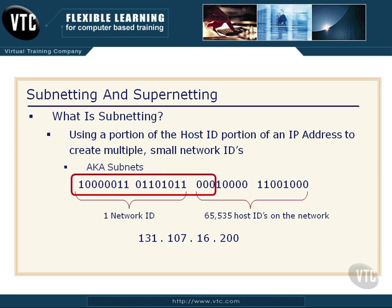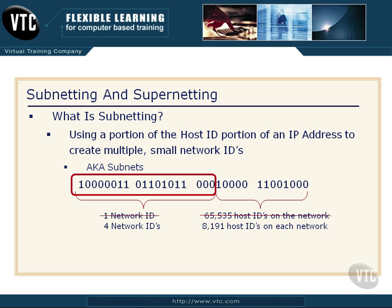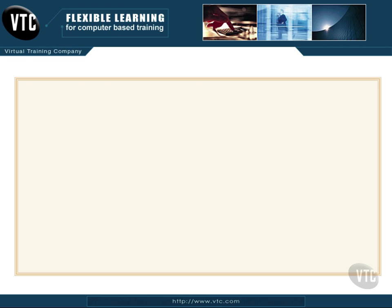What happens if we want more than one network and fewer hosts? Having 65,535 people on one network segment is going to be a problem. So how can we bust this up into smaller networks? We simply borrow bits to the right. This used to be our network ID, and now we're borrowing three bits to the right. When you work this out in binary, notice everything is shifted to the right — we no longer have one network, but we can now have four network IDs. Each one of those networks, instead of having 65,535 hosts, now has roughly 8,191 hosts. So now we have four networks with 8,191 hosts on each — this is much better. We have subnetted our original network.